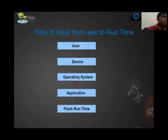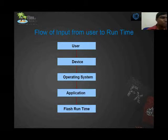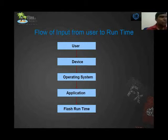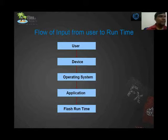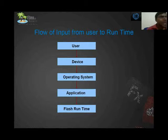The flow of input from user to runtime goes through: User → Device → Operating System → Application → Flash Runtime. If a user presses their finger or a touch device, the operating system first registers the events — either touch events or gesture events. Then the application listens and fires them in the Flash runtime. That is how the flow occurs.